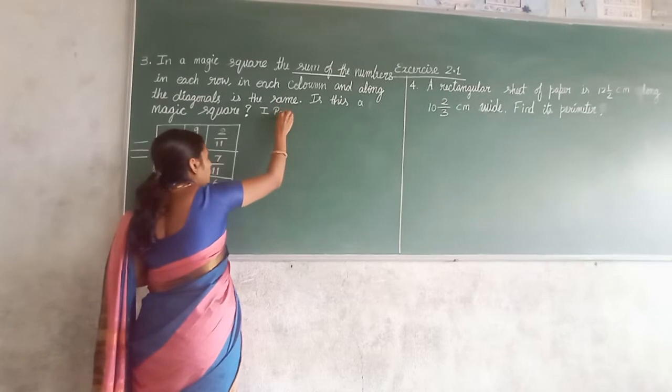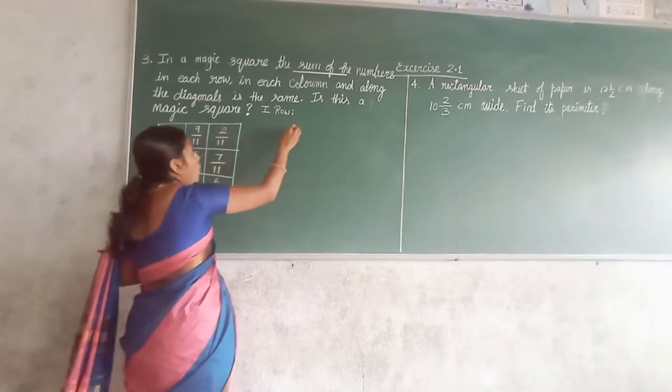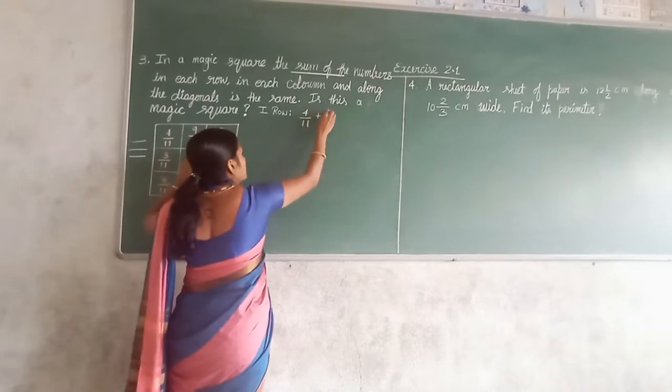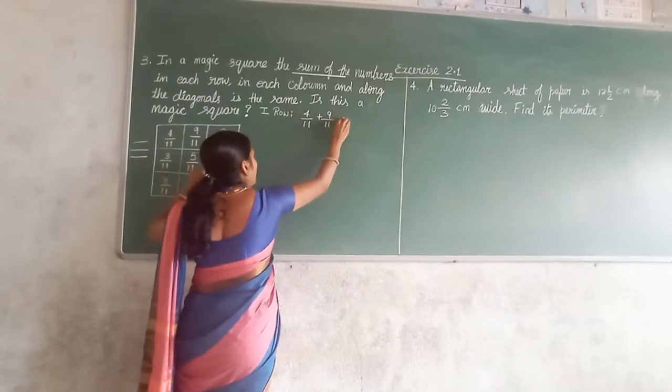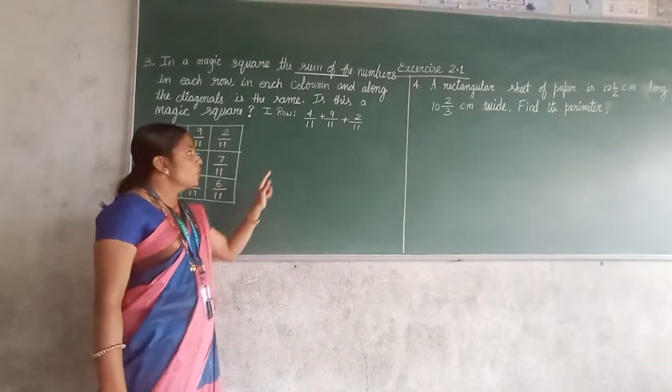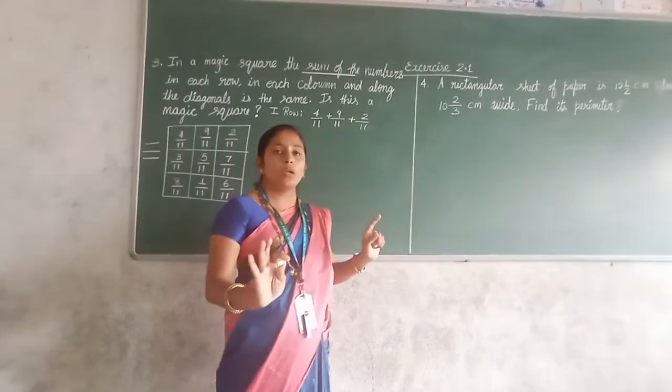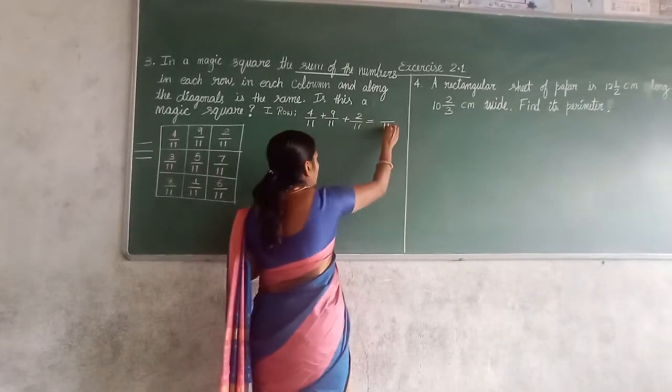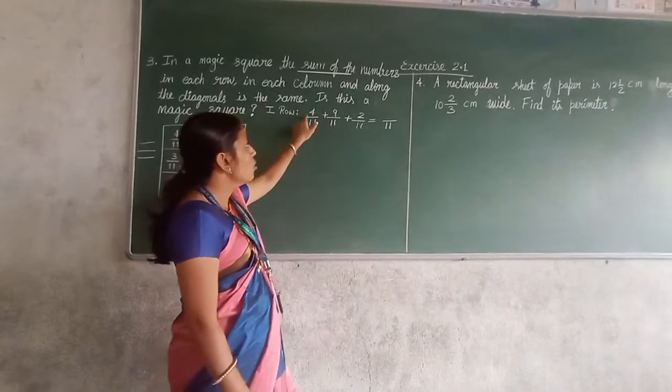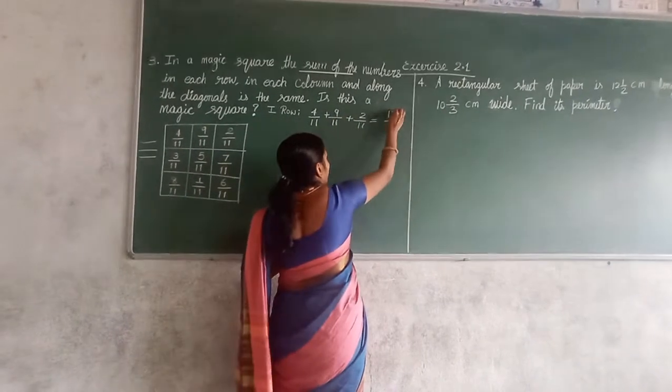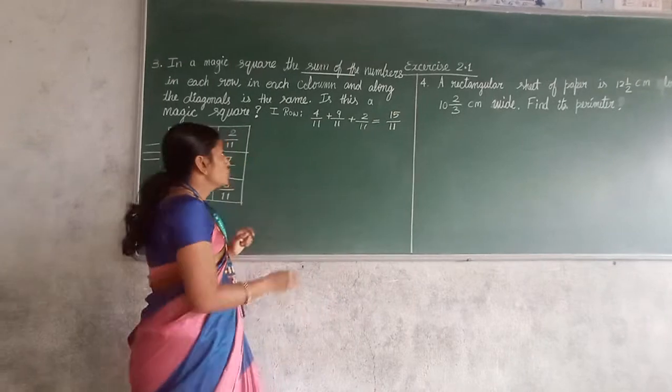So I am going to begin. 4 upon 11 plus 9 upon 11 plus 2 upon 11. My dear students, when the denominator is same, it is easy to add. Just you add 4 plus 9, 13. 13 plus 2, 15. So first row is over.